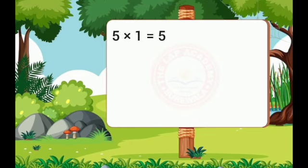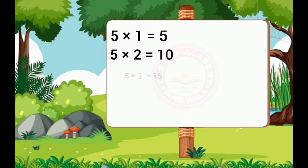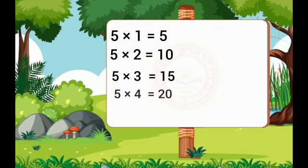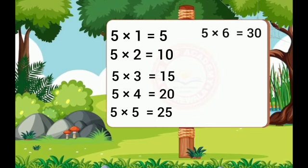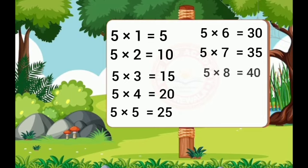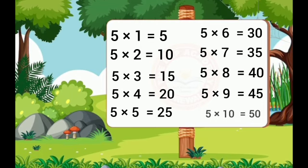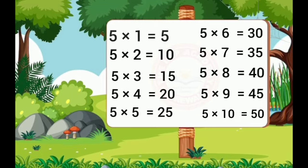Five ones are five, five twos are ten, five threes are fifteen, five fours are twenty, five fives are twenty-five, five sixes are thirty, five sevens are thirty-five, five eights are forty, five nines are forty-five, five tens are fifty. Thanks for watching.